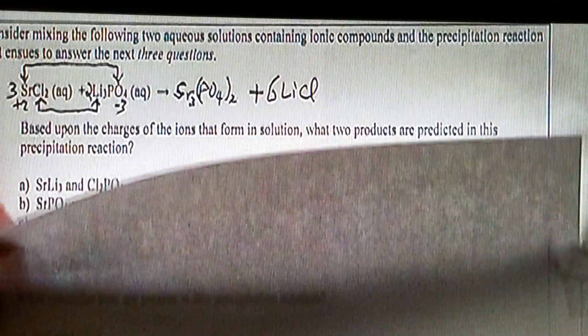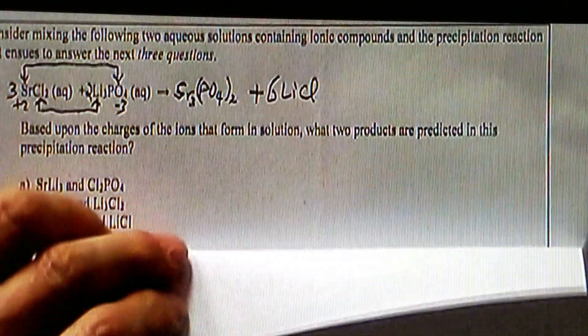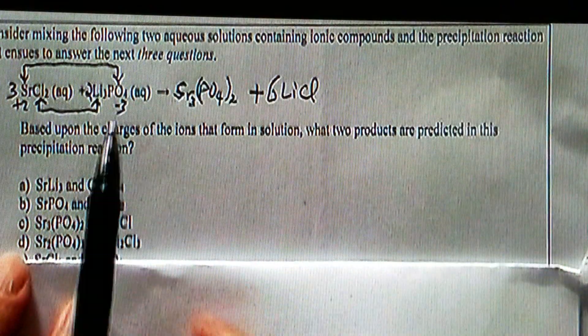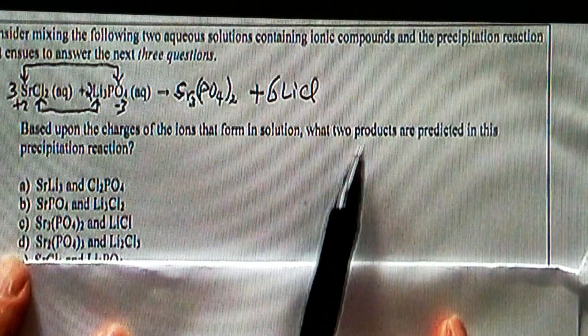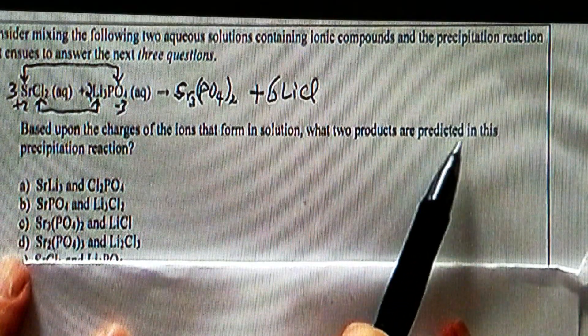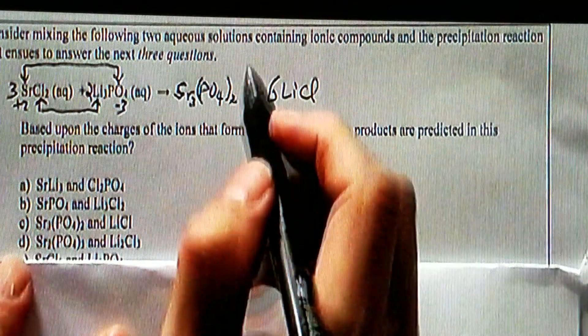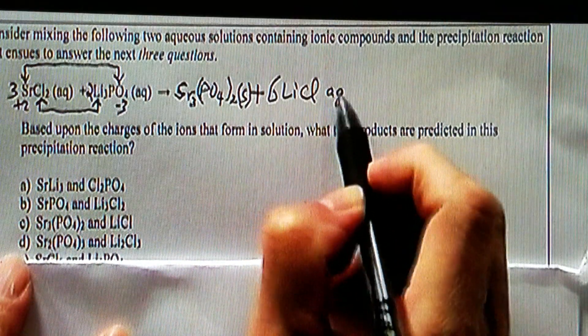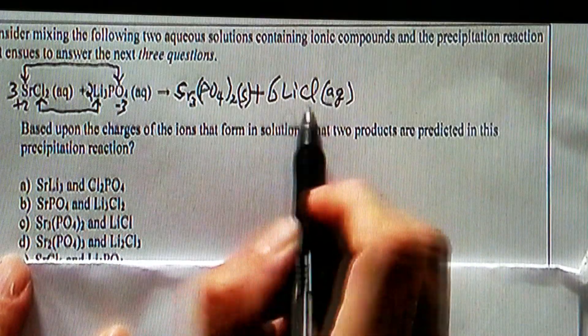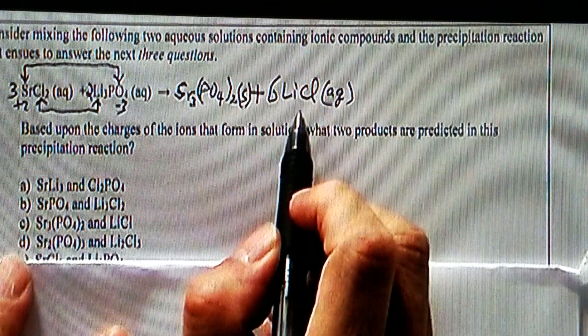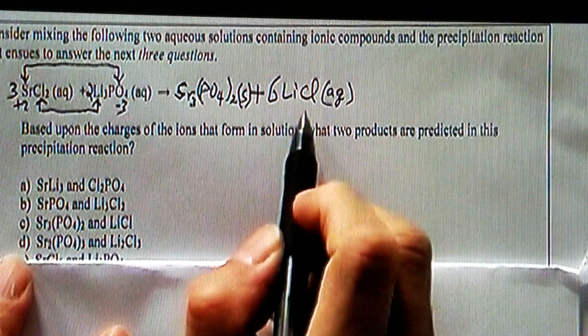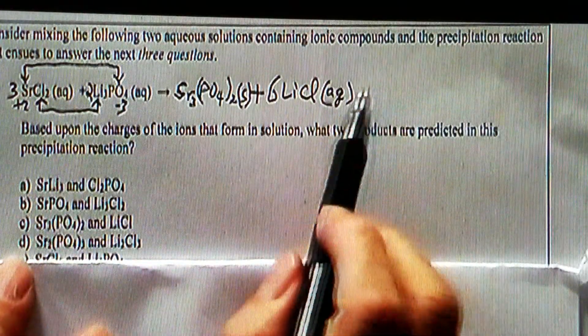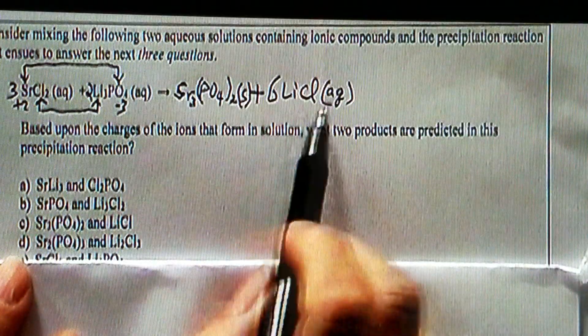And lithium, two times three, six. Lithium, six. Then phosphate, two phosphates and now two phosphates. Perfect. So that is balanced. Therefore, in order to answer question 16...